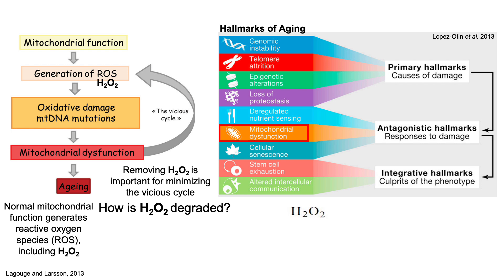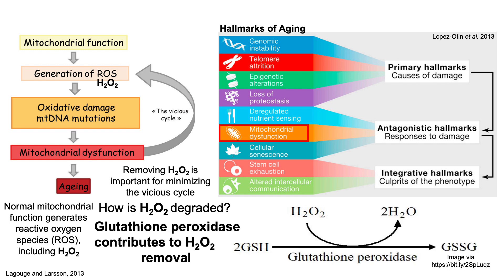One mechanism for degrading H2O2 involves glutathione, GSH. Two molecules of glutathione are involved in the process that degrades H2O2 into water. During that process, GSH becomes itself oxidized, thereby forming one molecule of glutathione disulfide, GSSG. This reaction, whereby H2O2 is degraded into water, is catalyzed by the enzyme glutathione peroxidase.